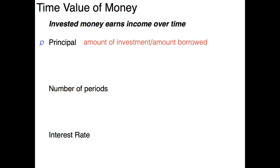There are two types of principal: a lump sum, or single sum, and an annuity. A lump sum is an amount that you've invested or borrowed one time, and it accumulates interest over time. An annuity is money you invest repeatedly, with the exact same payment each time — whether monthly or yearly, the amount is always the same.